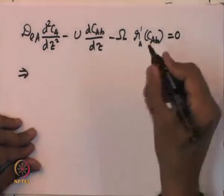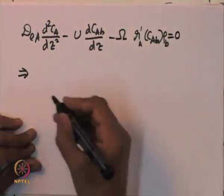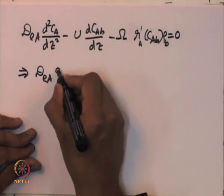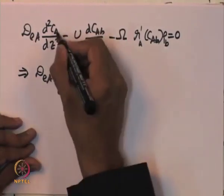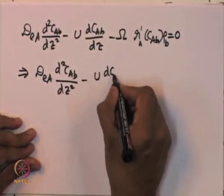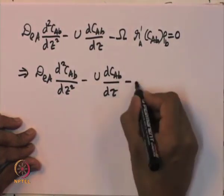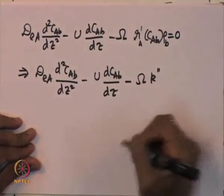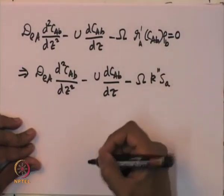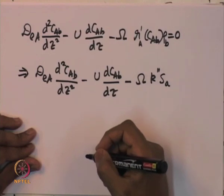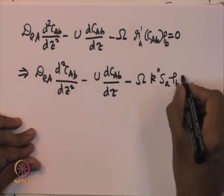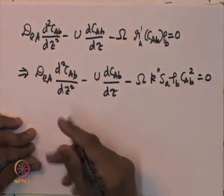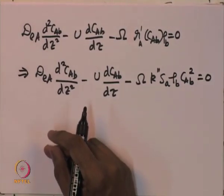Rewriting the mole balance with the rate law plugged in: D_EA · d²C_AB/dz² − U · dC_AB/dz − Ω · k″ · S_A · ρ_b · C_AB² = 0. This mole balance captures the heterogeneous catalytic reaction happening inside the packed bed reactor.